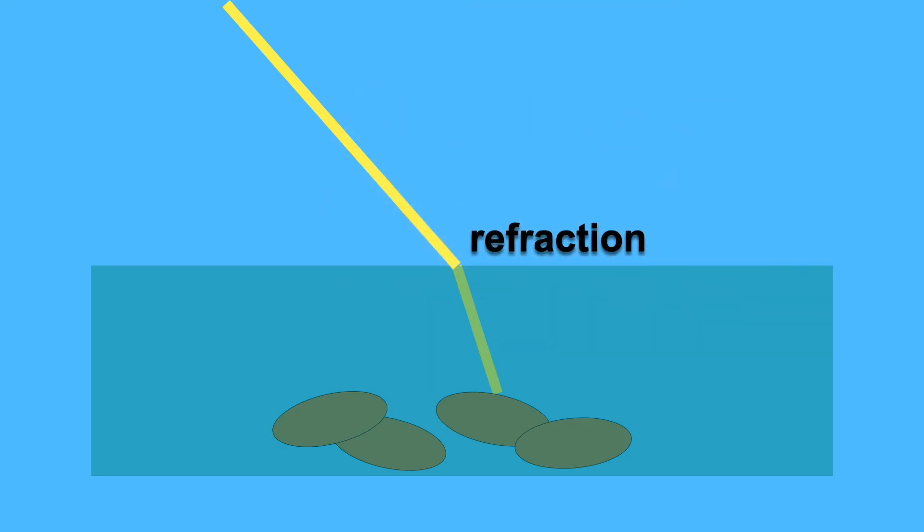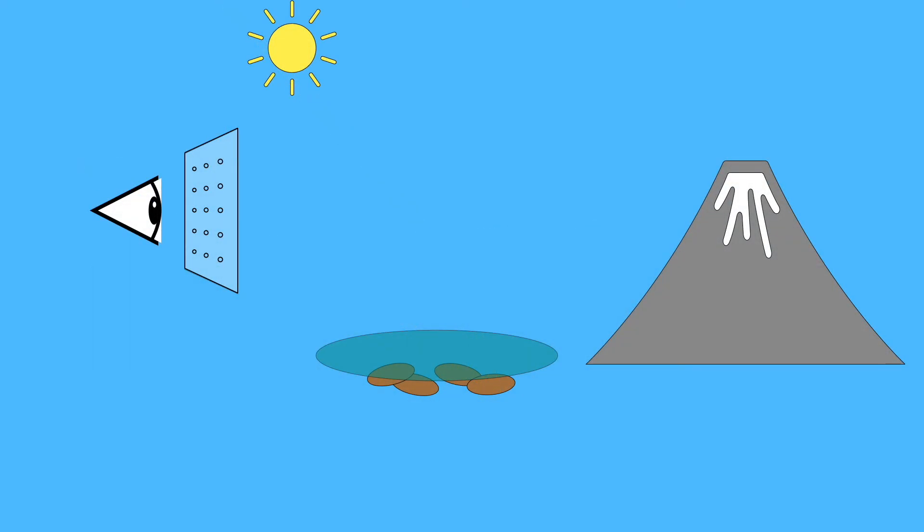It then hits the rock, bounces off, and refracts again as it exits on the path to the eye. So when we look at this point in the lake, we will see two different light paths at the same time.